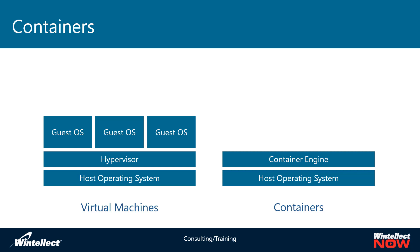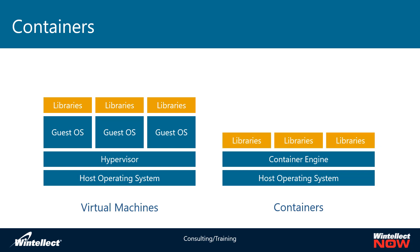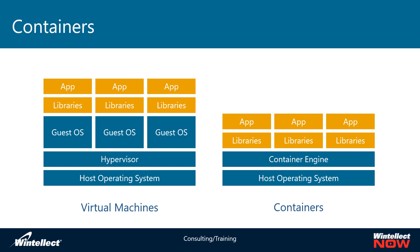Short of that, they converge after the layer of a guest operating system, where you have libraries on top of the guest operating system and libraries within the context of a container. Then on top of those libraries, you have apps running. So the basic difference between containers and virtual machines is where they do the abstraction: virtual machines interact with a hardware abstraction, while containers interact with a kernel abstraction.